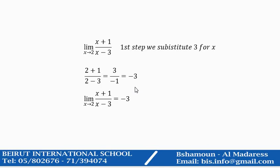If you end up with a number, then the limit as x approaches 2 of x plus 1 over x minus 3 is minus 3, and this is done.